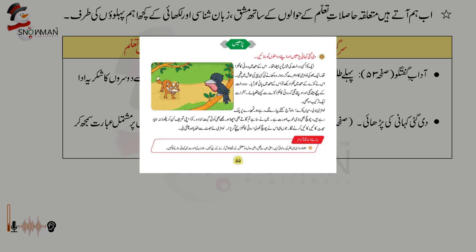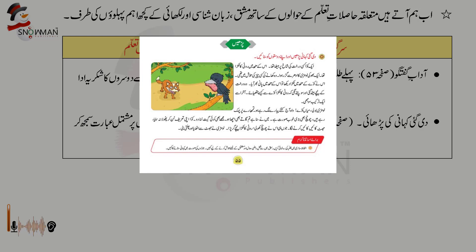ایک بھوکی لومڑی کا ادھر سے گزر ہوا، وہ کھانے کی کسی چیز کی تلاش میں تھی۔ اس نے کوے کے منہ میں ٹکڑا دیکھا تو اس کے منہ میں پانی بھر آیا۔ وہ درخت کے نیچے بیٹھ گئی اور سوچنے لگی کہ روٹی کا ٹکڑا کوے سے کیسے ہتھیائے؟ آخر اسے ایک ترکیب سوجھی۔ لومڑی بولی: 'میاں کوے! واہ، آج کتنے پیارے لگ رہے ہو، تمہارے پر چمک رہے ہیں، چونچ بھی بڑی خوبصورت ہے، میں نے سنا ہے تم گاتے بھی بہت اچھا ہو، مجھے بھی کوئی گیت سنا دو۔' کوا اپنی تعریف سن کر پھولا نہ سمایا، جھٹ کائیں کائیں کرنے لگا، جوں ہی اس نے چونچ کھولی روٹی کا ٹکڑا نیچے گر پڑا اور لومڑی نے جھٹ سے اٹھایا اور چلتی بنی۔